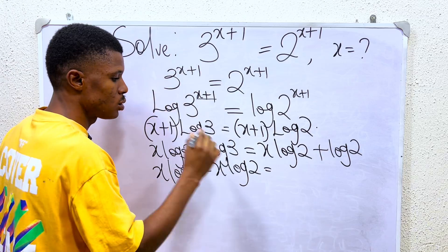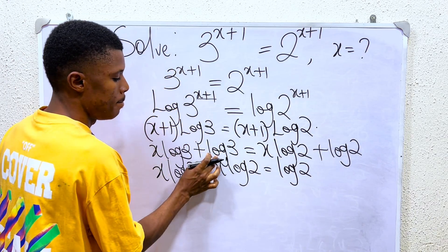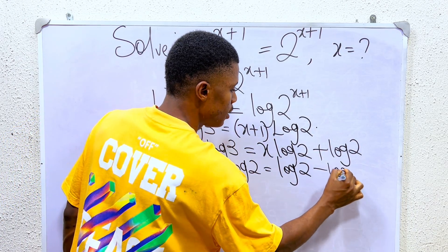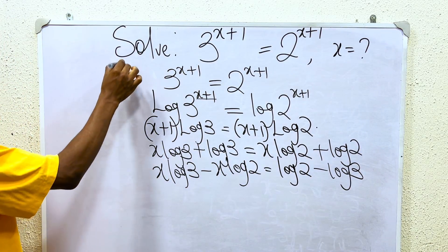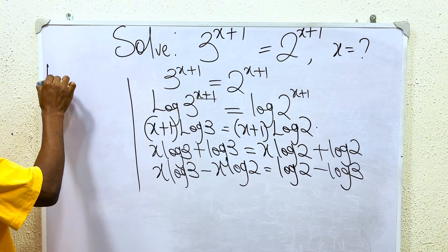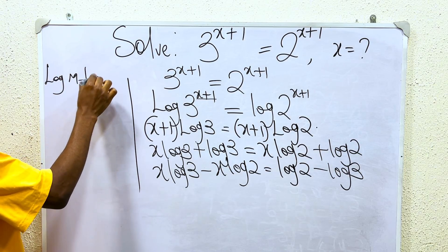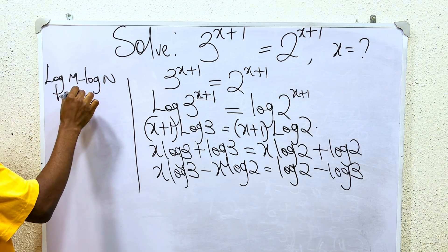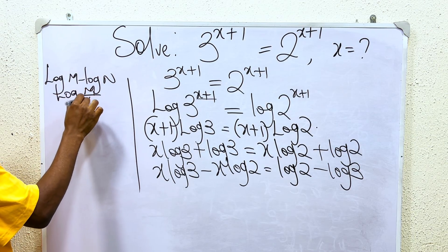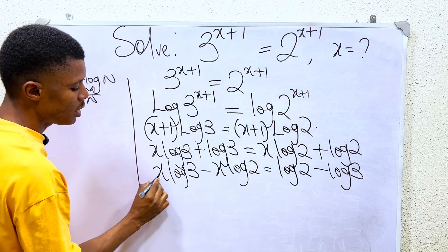And that equals log 2 minus log 3. In logarithm we have one particular law which says that whenever we have log m minus log n, all we have to do is to keep the base the same and divide the numbers.